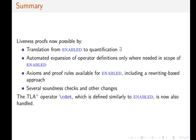So in summary, now with the new functionality, the proof assistant TLAPS can check liveness proofs. And it can do that by using a translation from ENABLED to existential quantification.